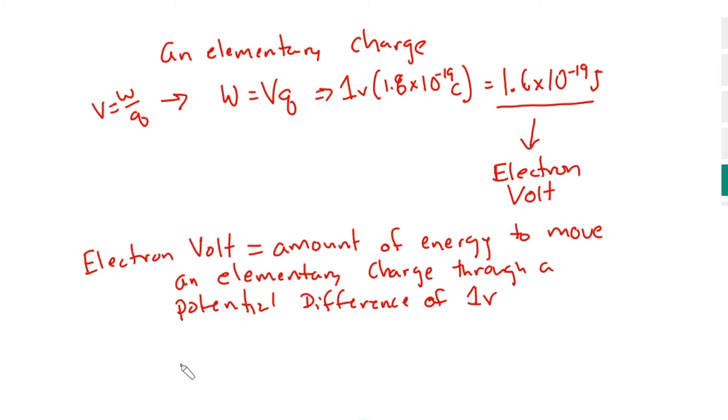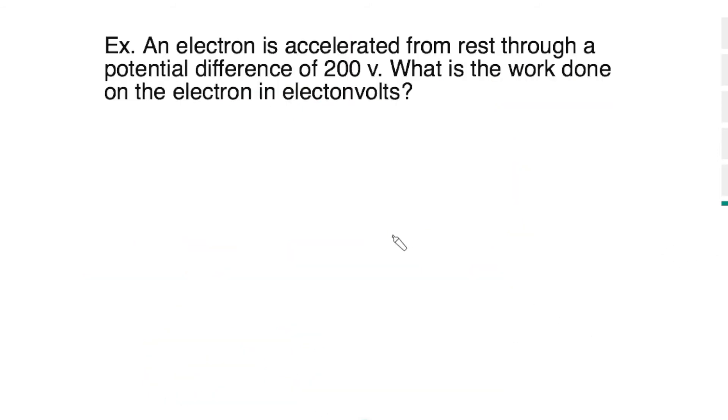So this is just a conversion where one eV, that's going to be the symbol, is equal to 1.6 times 10 to the minus 19th Joules. So you are going to have to use this conversion to solve and change energy into electron volts. Let's take a look at that. An electron is accelerated from rest through a potential difference of 200 volts. What is the work done in electron volts? So first, we need to find the work done in Joules, then convert it to electron volts.